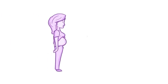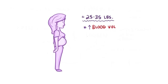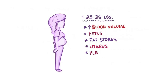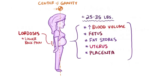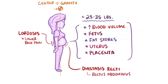Normally, women gain 25 to 35 pounds throughout the pregnancy, and that extra weight is mostly due to the increased blood volume, followed by the fetus itself, fat stores, the uterus, and finally the placenta. The extra weight and the forward shift in the center of gravity can cause lordosis and lower back pain. Women can also get diastasis recti, where the uterus puts direct pressure on the rectus abdominis muscles, making them separate. In general, this pain can make it tough to get a good night's rest.